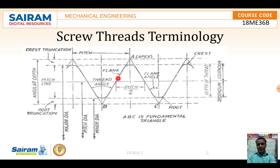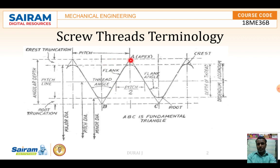The fundamental triangle ABC represents the full depth of the thread. Truncation is the distance from the fundamental triangle apex to the crest at the top, and from the bottom apex to the root at the bottom — giving us crest truncation and root truncation respectively.